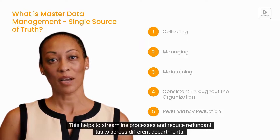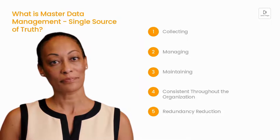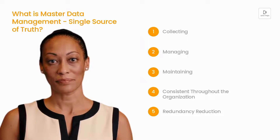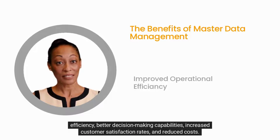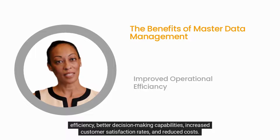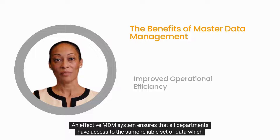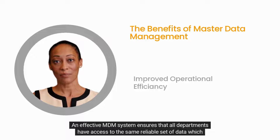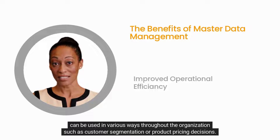This helps to streamline processes and reduce redundant tasks across different departments. Having an effective MDM strategy can bring many benefits to an organization, including improved operational efficiency, better decision-making capabilities, increased customer satisfaction rates, and reduced costs. An effective MDM system ensures that all departments have access to the same reliable set of data, which can be used in various ways throughout the organization, such as customer segmentation or product pricing decisions.